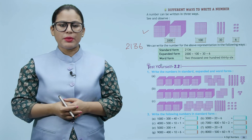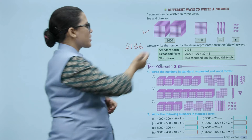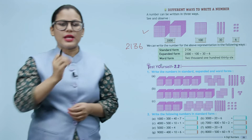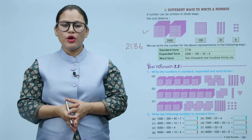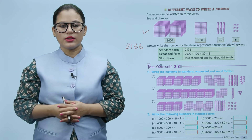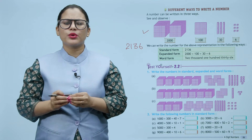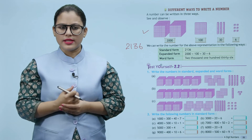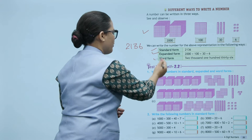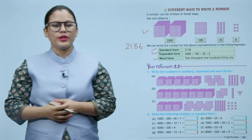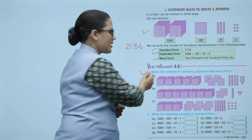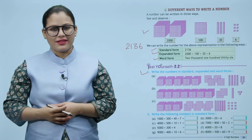Expanded form: two thousand plus one hundred plus thirty plus six. And word form: two thousand one hundred thirty six. Toh is tarah se hum kisi bhi number ko teen type mein likh sakte hai — standard form, expanded form and word form. Okay children? Aap is exercise ki practice khud se karenge.